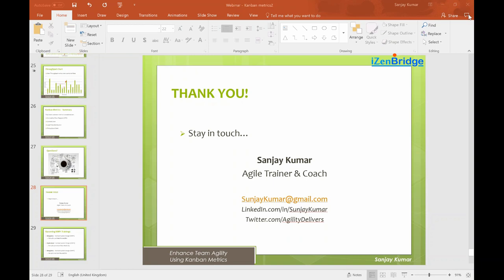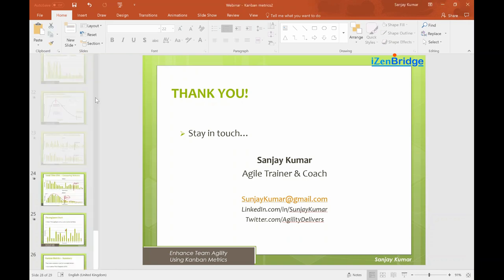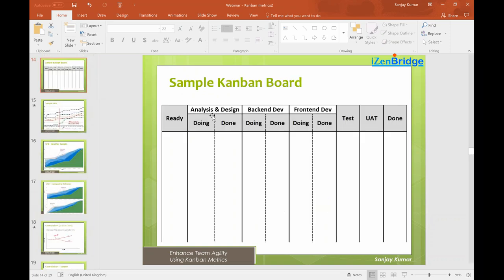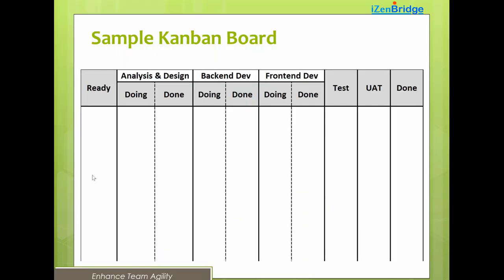Question: for which column is lead time measured on a Kanban board? Lead time covers the entire flow. Looking at the board, lead time starts when an item enters the flow — at the 'Ready' column — and ends when the item exits on the right side. You take the difference between the end time and the start time to calculate lead time.